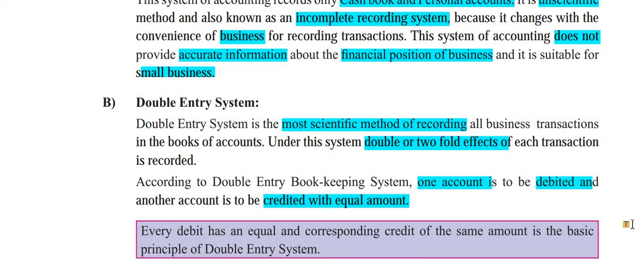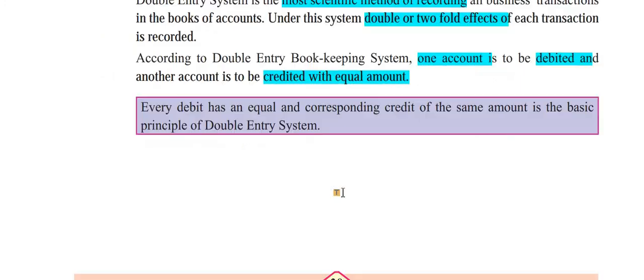There are two effects in every transaction. Double entry bookkeeping means two accounts are affected — one account is to be debited and another account is to be credited with an equal amount. Every debit has an equal and corresponding credit of the same amount. This is the basic principle of the double entry system.